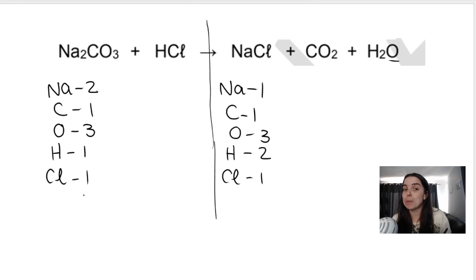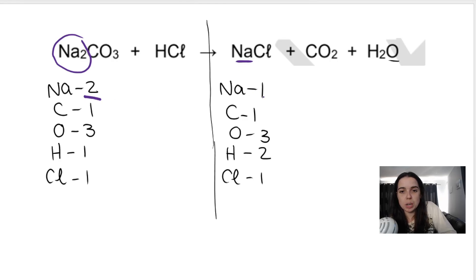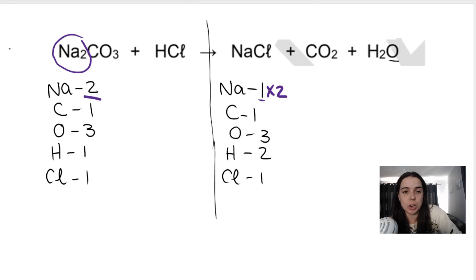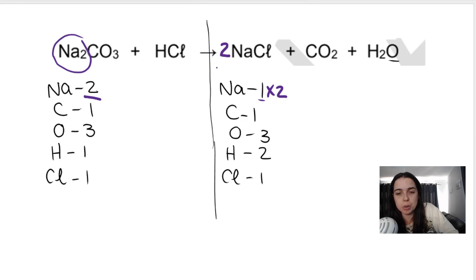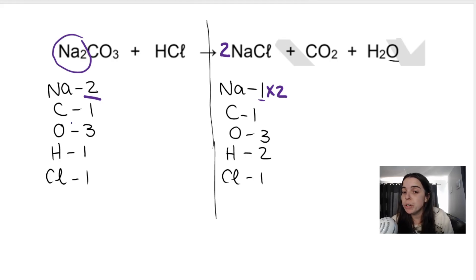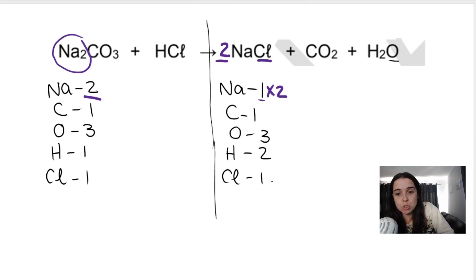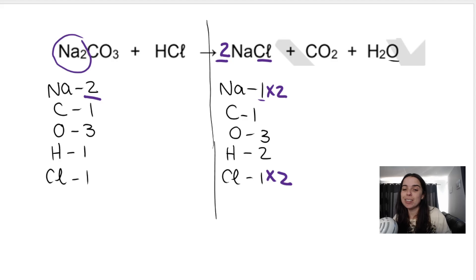The first thing that stands out is there are two sodiums on this side and only one sodium on this side. So I'm going to multiply the sodiums by two. You can only balance by putting big numbers — big coefficients — in the equation; you can never add little numbers, ever. So I've now made sure the sodiums are the same, but that also affected the number of chlorines. Now I no longer have one chlorine on the right hand side, I have two.